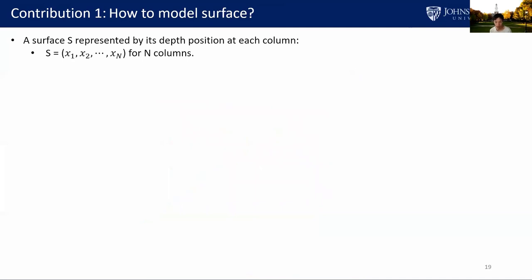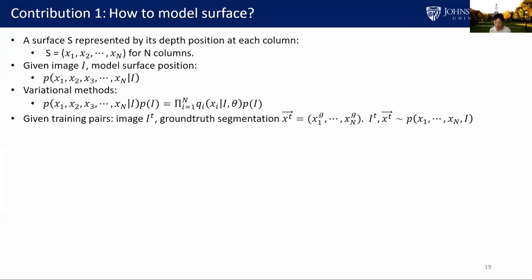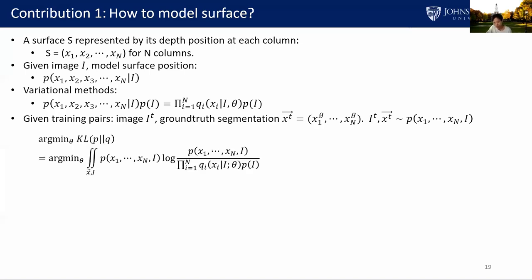We represent surface S by n random variables x1 to xn. Given image I, we want to model the surface position probability P and find the most probable axis. We use the variational Bayesian method, modeling each xi with a qi and finding parameters theta satisfying this equation. We use a deep network with parameter theta to represent those qi's. Given training pairs of images It and ground-truth surfaces xt, we assume those pairs are sampled from joint distribution P. To optimize theta, we minimize the KL divergence between P and Q, resulting in a standard KL divergence equation.